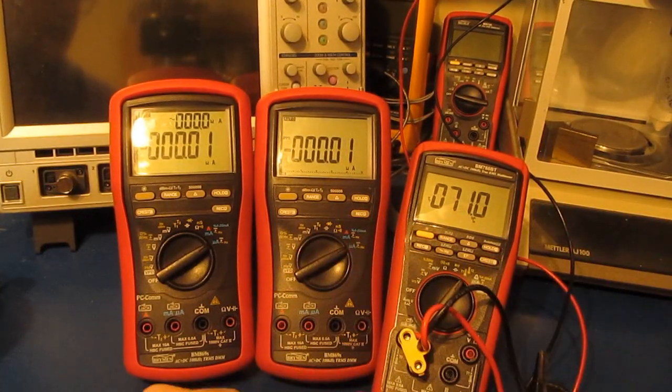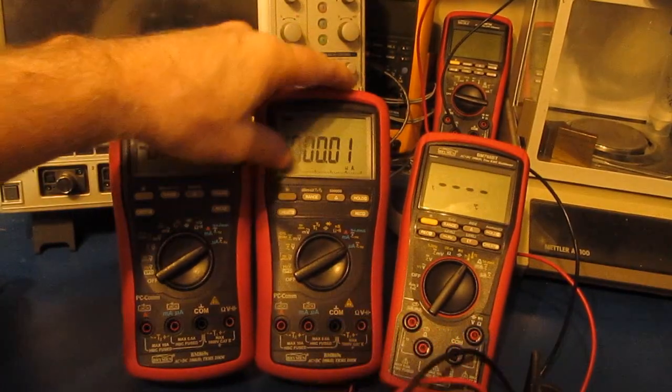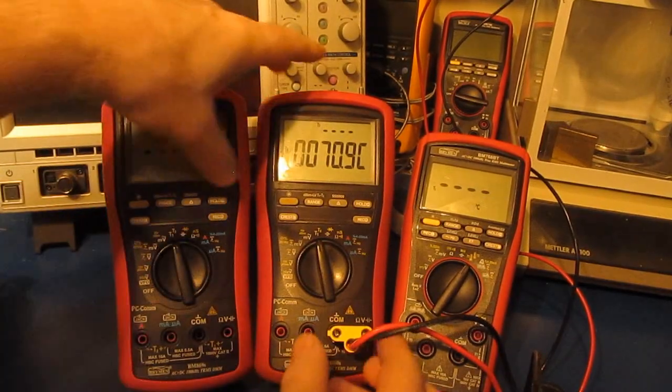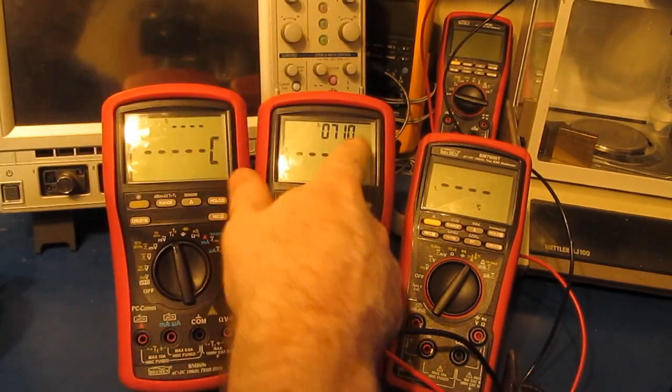T2, and you can see it's reading 71.0. Now let's look at the Brymen BM869S. Here's T1, and you can see it's measuring 70.9. Let's try it on the second thermocouple, and you can see it's reading